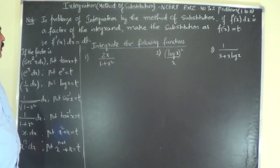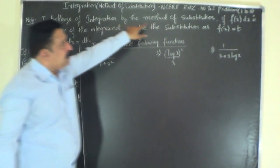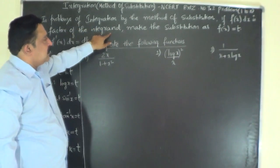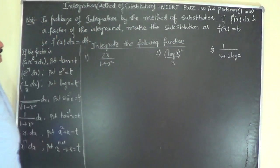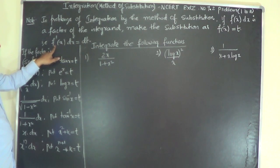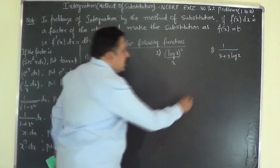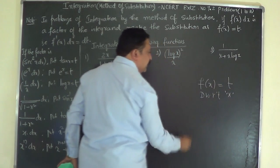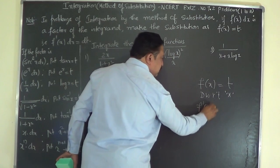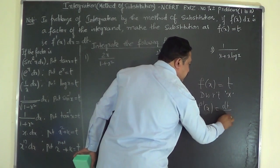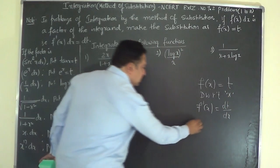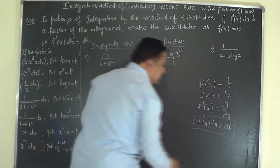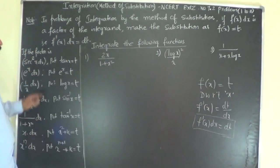Note: in problems of integration by the method of substitution, if f'(x) dx is a factor of the integrand, then make the substitution f(x) = t and differentiate. If you differentiate f(x), you get f'(x) dx = dt. You put f(x) = t and differentiate with respect to x; the left-hand side becomes f'(x), and the right-hand side becomes dt/dx, which cross-multiplied gives f'(x) dx = dt. This f'(x) dx = dt is called the replacement factor.